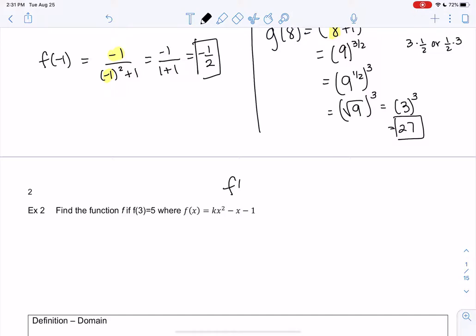Now we know f of 3 equals 5. So x is 3, y is 5. And we want to figure out what function makes it true. So basically we have this quadratic, but we don't know what k is. So k times x squared minus x minus 1. k is unknown.